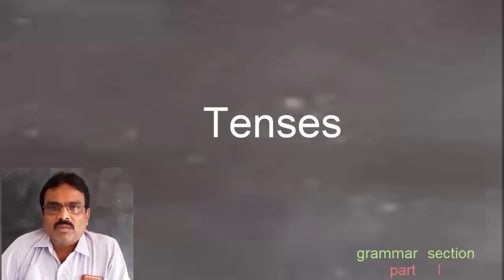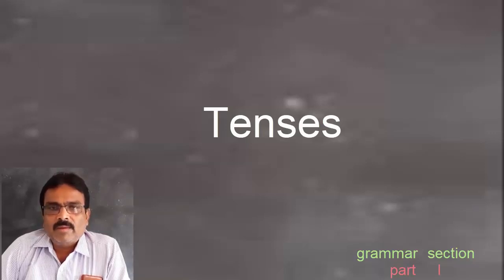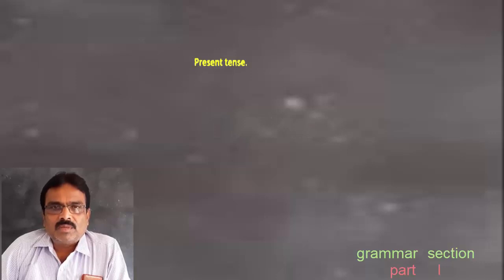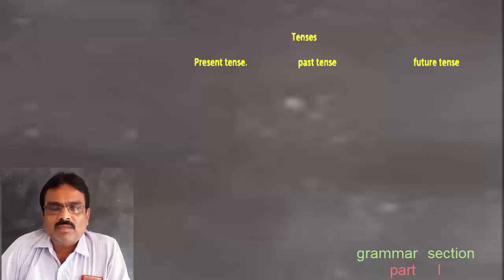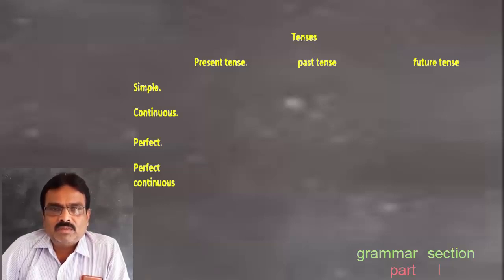Today I am going to revise the tenses which we have discussed in our earlier classes. As per previous discussion, it is clear there are mainly three tenses: present, past, and future. In each main tense there are four sub-tenses, namely simple, continuous, perfect, and perfect continuous.